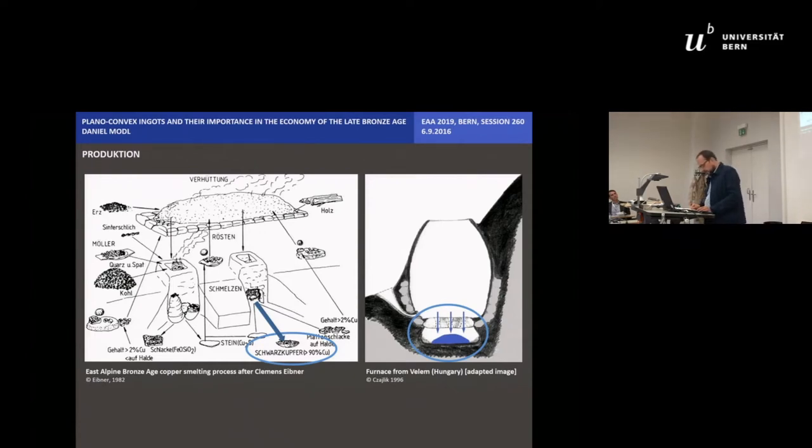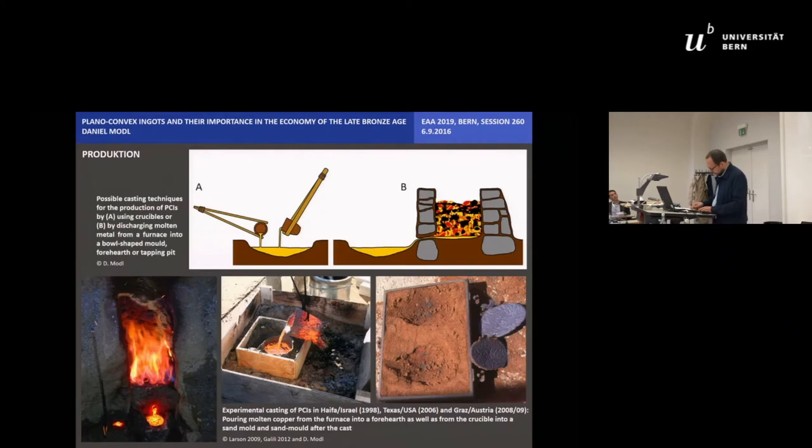For me it's more likely that the end product of the ancient smelting process were amorphous copper lumps mixed with slag which needed to be melted and recast. Therefore the PCI is rather the product of a secondary process in which the molten metal is cast into a shallow pit in the ground or in a bowl-shaped mold. Whether the pour was carried out by use of crucibles or by discharging molten metal from the bottom of the furnace into a forehead or a tapping pit is still open.